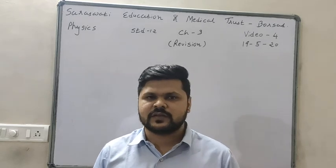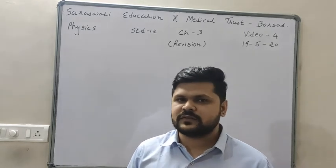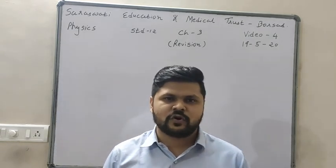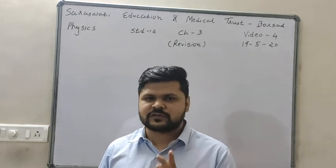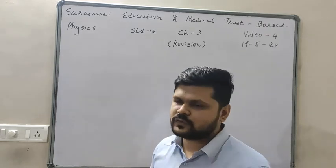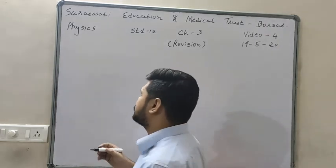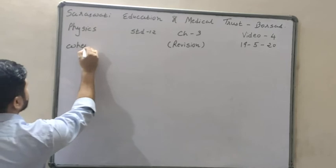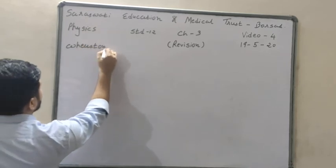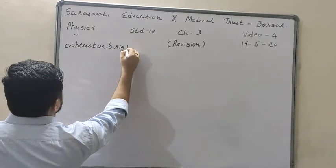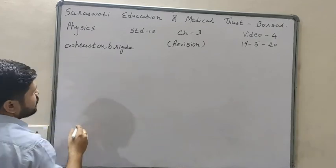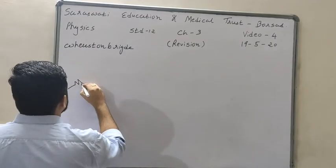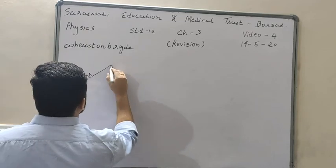Now we will see an example that is based on Wheatstone Bridge, and that is also frequently asked. In the board exam of 2020, this example was asked. So first of all, we will see what is Wheatstone Bridge. There are 4 resistances in Wheatstone Bridge.